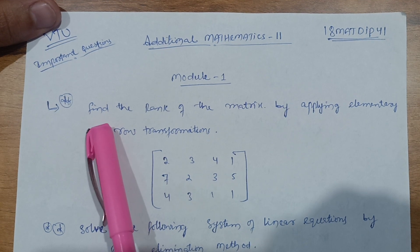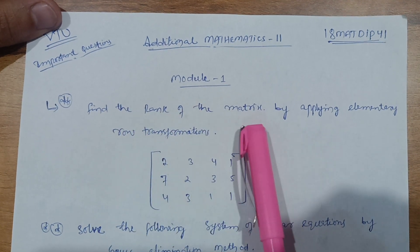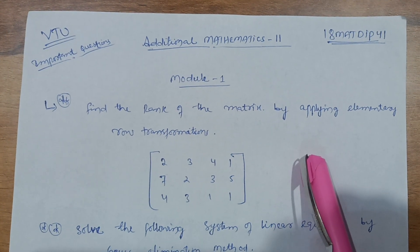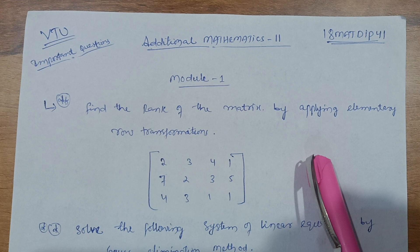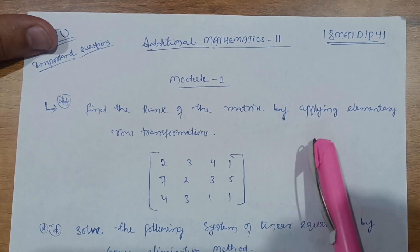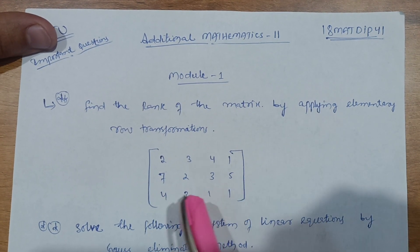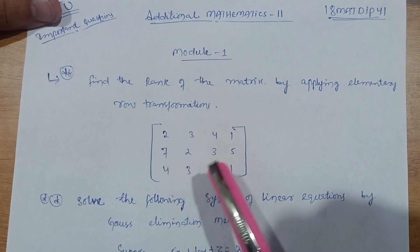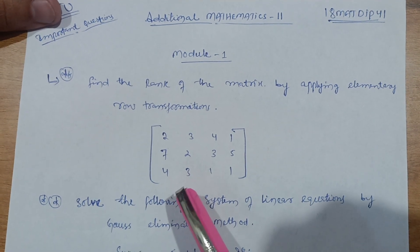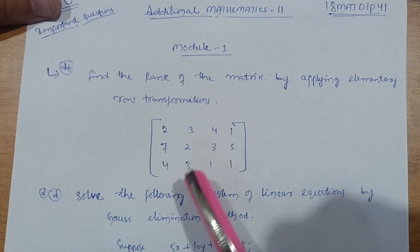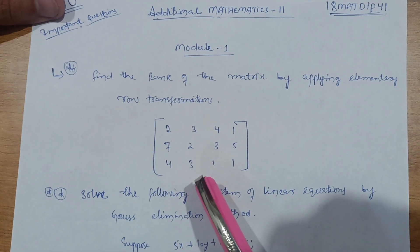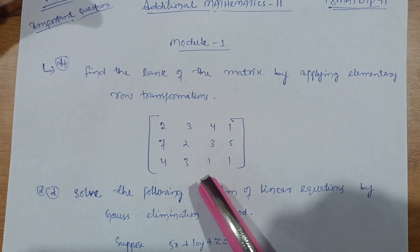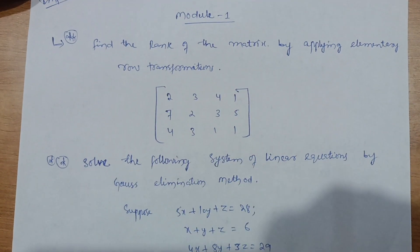First, you have to find the rank of the matrix by applying elementary row transformations — concepts you have already come across from PU. In finding the rank of the matrix, you make the upper or lower triangular matrix entries zero by transforming rows. The rank is the number of non-zero rows remaining in the matrix.